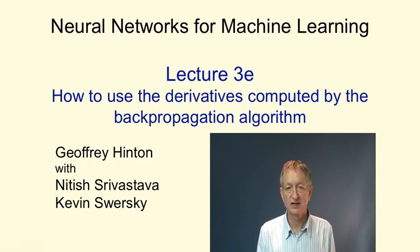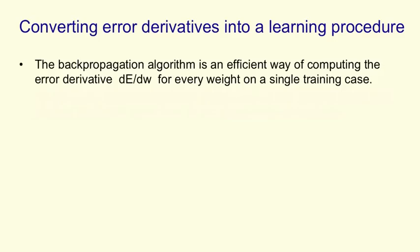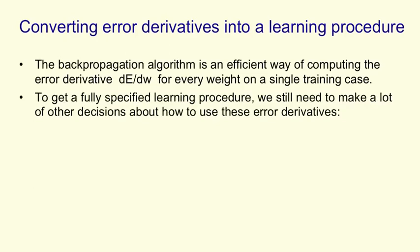For example, we need to decide how often to update the weights and we need to decide how to prevent the network from overfitting very badly if we use a large network. The backpropagation algorithm is an efficient way to compute the derivatives with respect to each weight of the error for a single training case. But that's not a learning algorithm. You have to specify a number of other things to get a proper learning procedure.